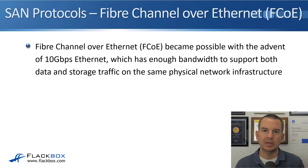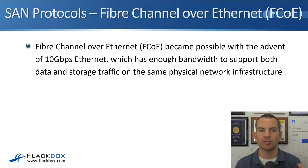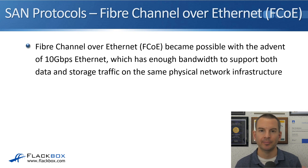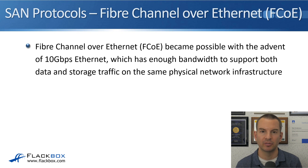Fibre Channel over Ethernet became possible when 10 Gigabit Ethernet came out. That provided enough bandwidth to support both data and storage traffic over the same shared network infrastructure. Before 10 Gigabit Ethernet, our servers had 1 Gigabit Ethernet cards, and that was really pushing it to have enough bandwidth to run both storage and data traffic over that same physical card.